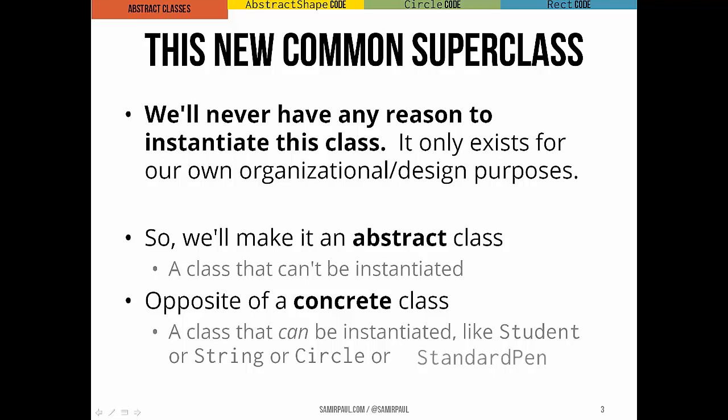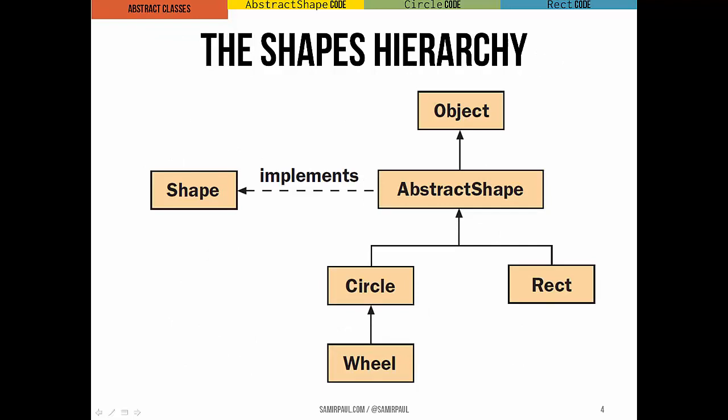Now the classes that extend this class and that are instantiated, we call those concrete classes. So there's a distinction: abstract classes, which we don't instantiate, versus concrete classes, which we do instantiate. Now it would be nice in this situation to call this new abstract class just 'shape' because that's a sensible common superclass of Circle and Rect. But shape is already the name of the interface that we were using, so instead we're just going to call it AbstractShape.